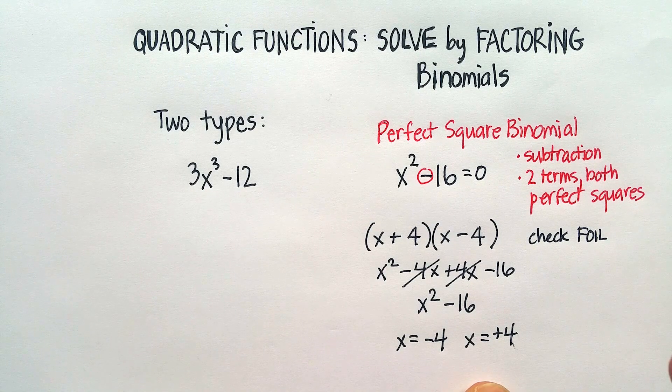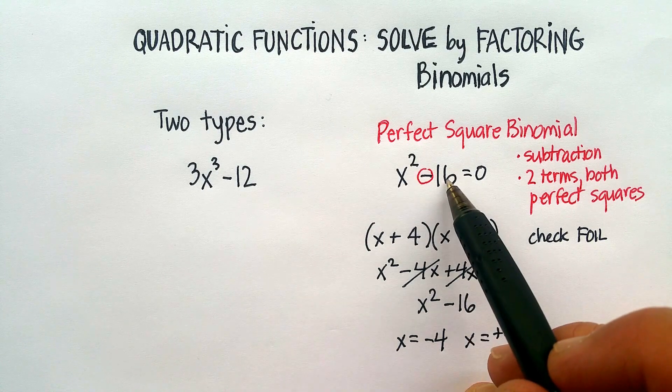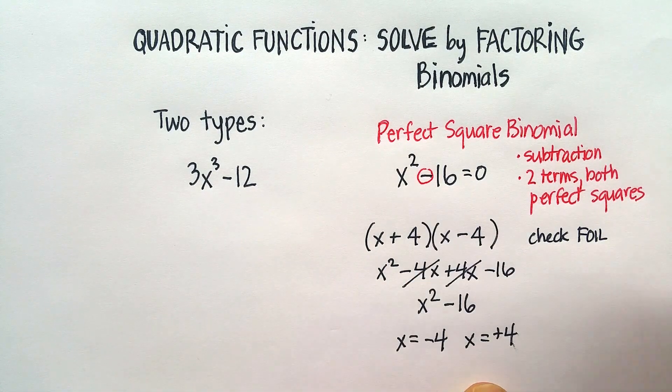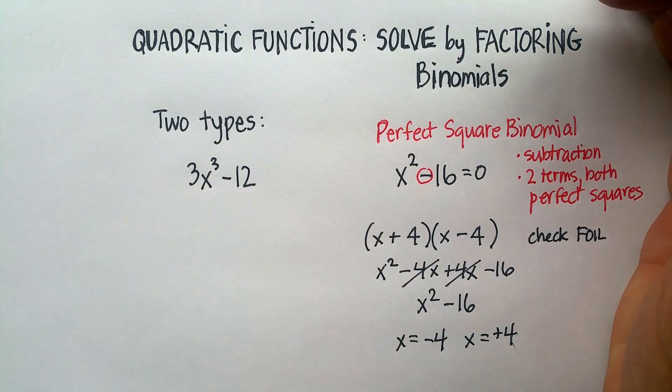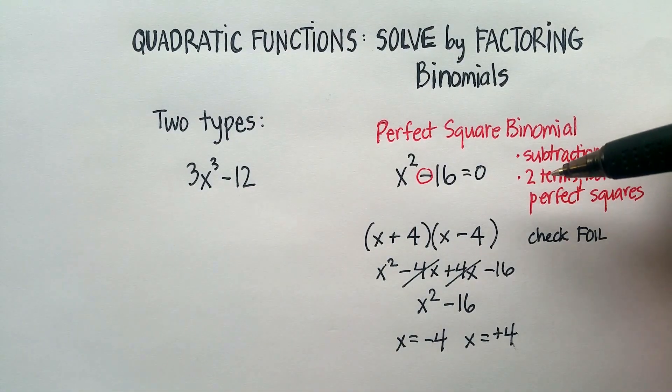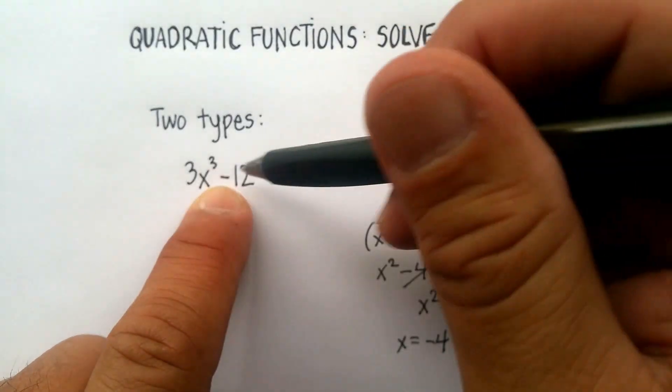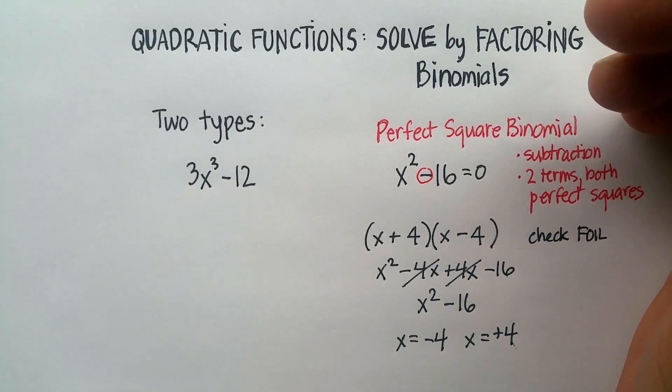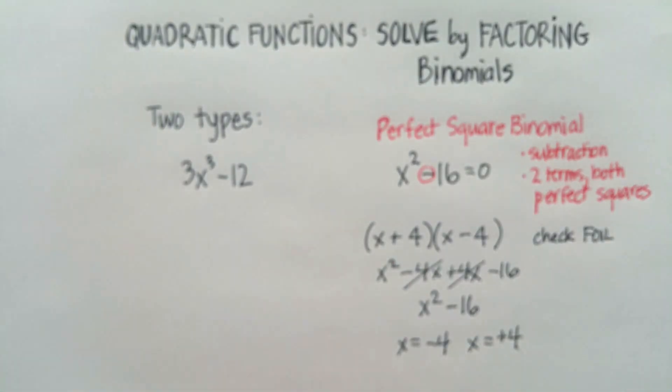Remember both have to be perfect squares and they have to be separated by a subtraction sign, nothing else will work. Now here's another example. When I look at this and I just go through this checklist, I see that it's a binomial, it does have a subtraction, but the two terms are not perfect squares. But be careful, you should always try to factor out any common factors first.